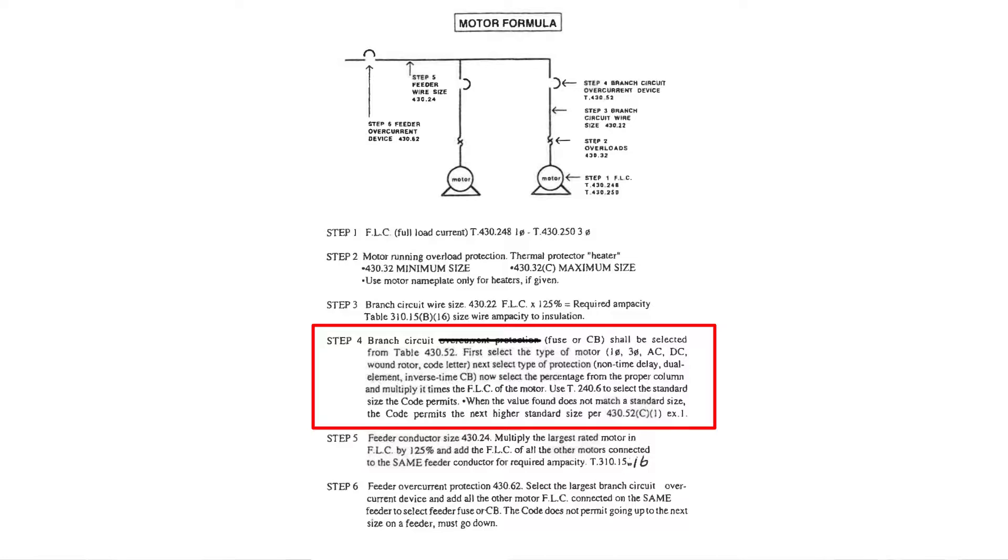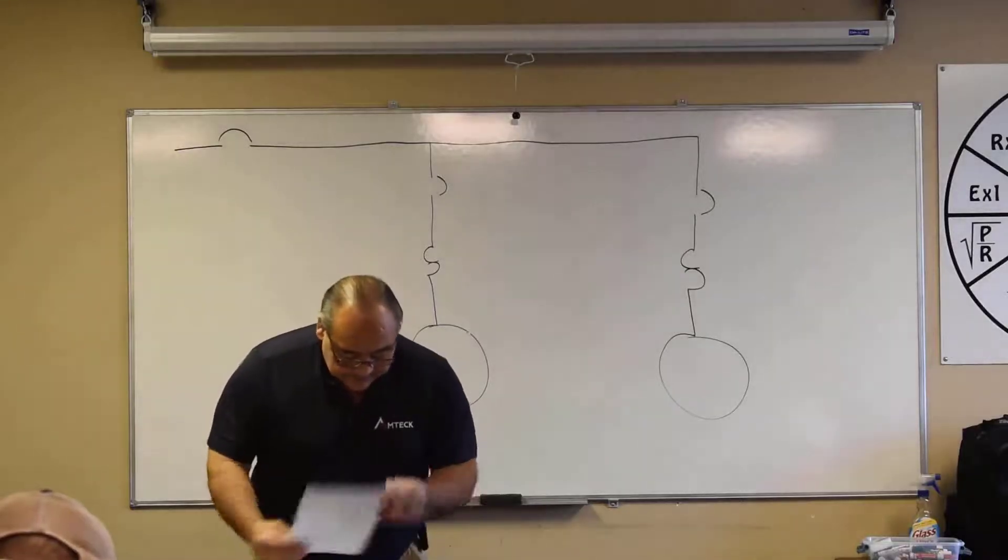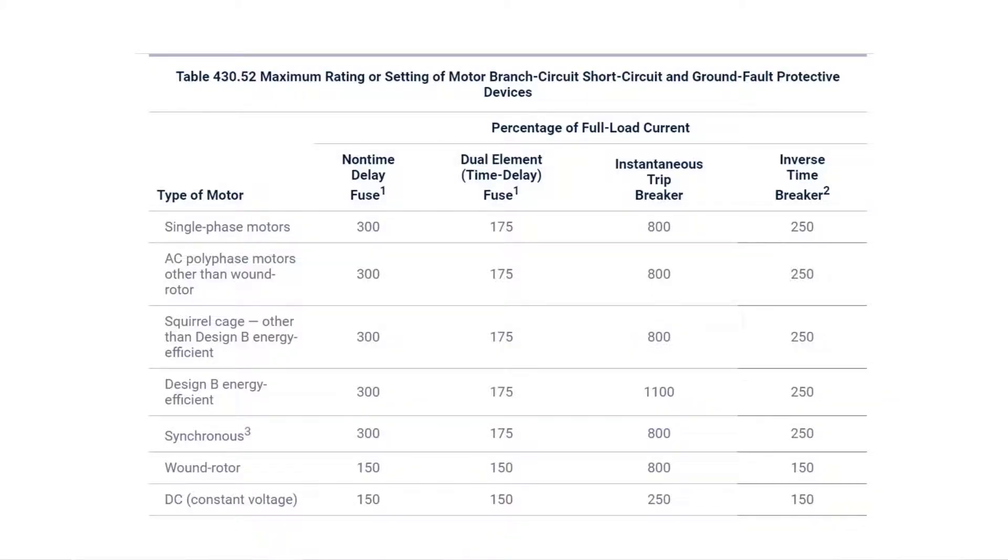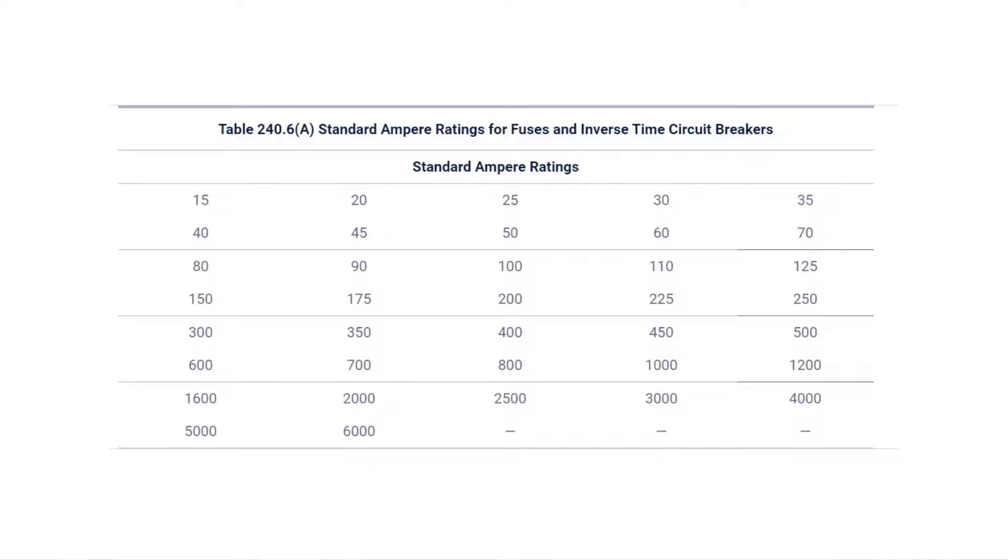When the value found does not match the standard size, the code permits the next higher standard size. So let's use this 10 amp motor at 240 volts, single phase. Now we're going to size the fuse or circuit breaker on step number four. Hold the page with a piece of paper and let's go to that table 430.52. Got something glued in right beside it, right? Conveniently. That's that 240.6 table, the standard fuse or circuit breaker sizes.